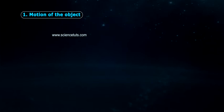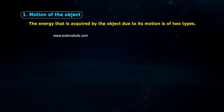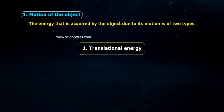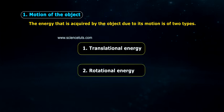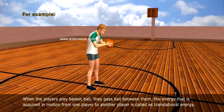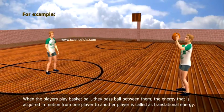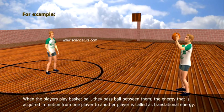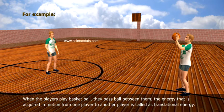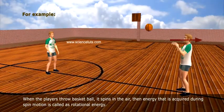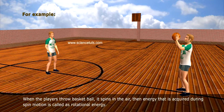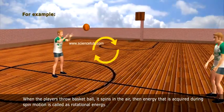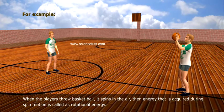Motion of the object. The energy that is acquired by the object due to its motion is of two types: 1. Translational energy, 2. Rotational energy. For example, when the players play basketball, they pass the ball between them. The energy that is acquired in motion from one player to another player is called translational energy. When the players throw basketball, it spins in the air. The energy that is acquired during spin motion is called rotational energy.